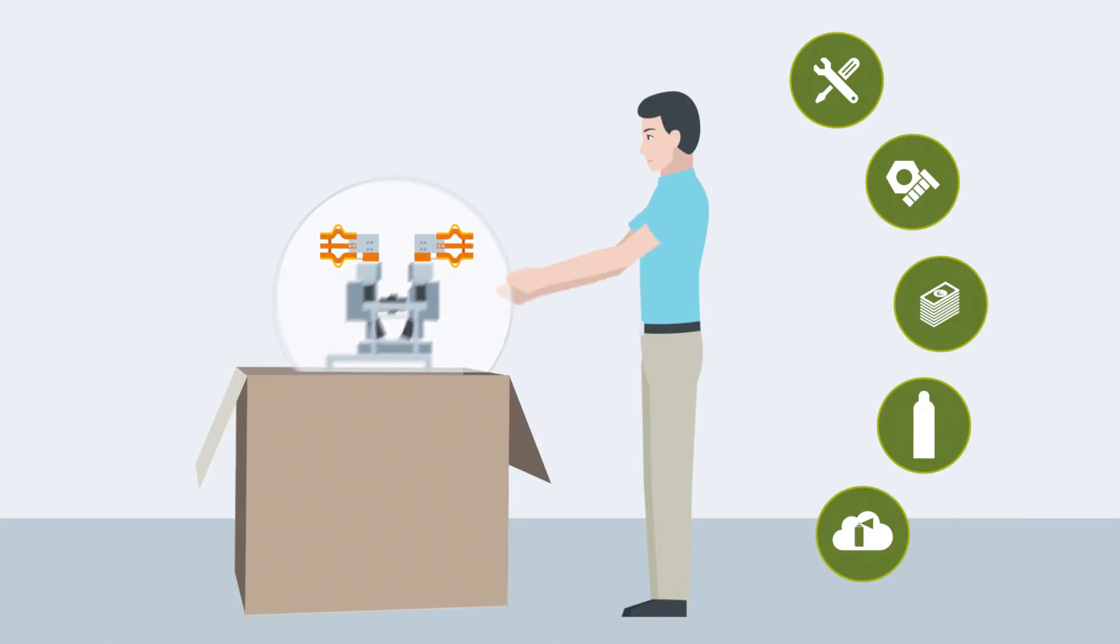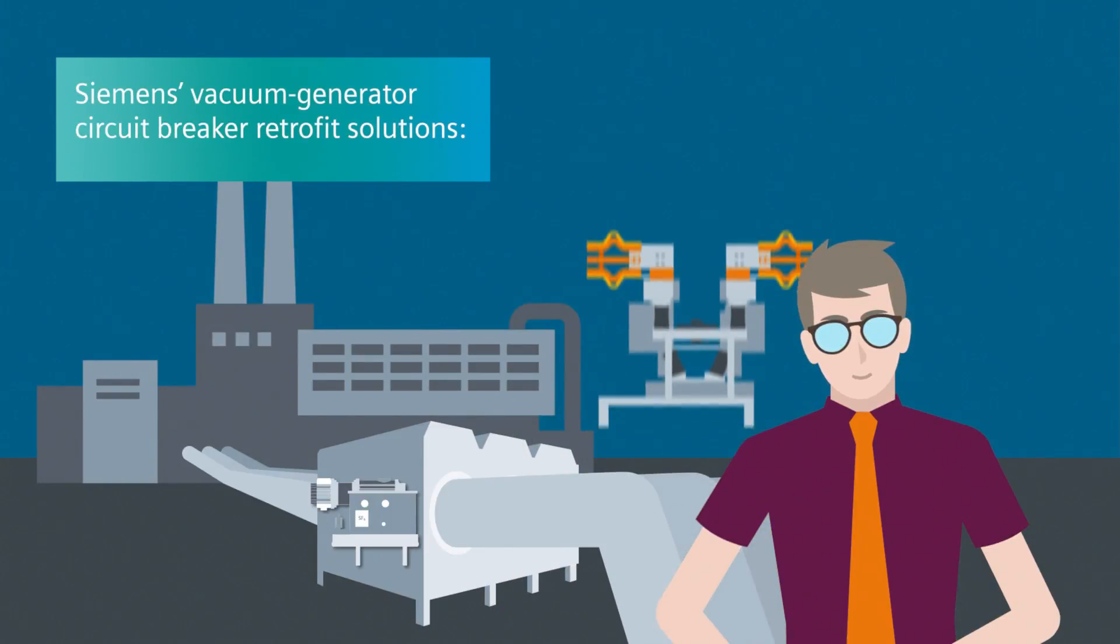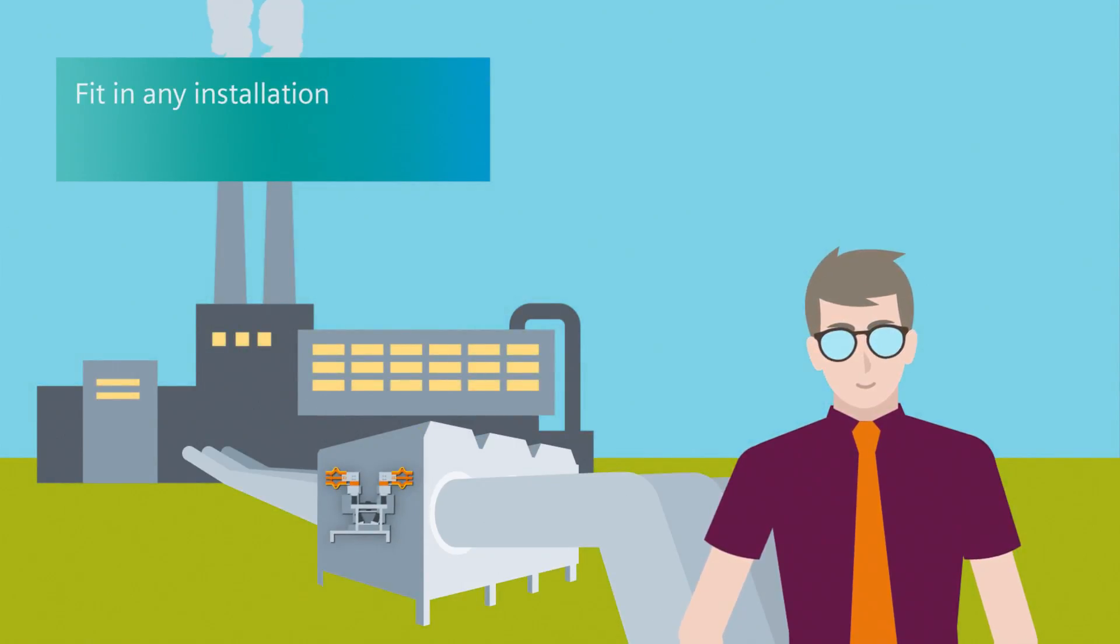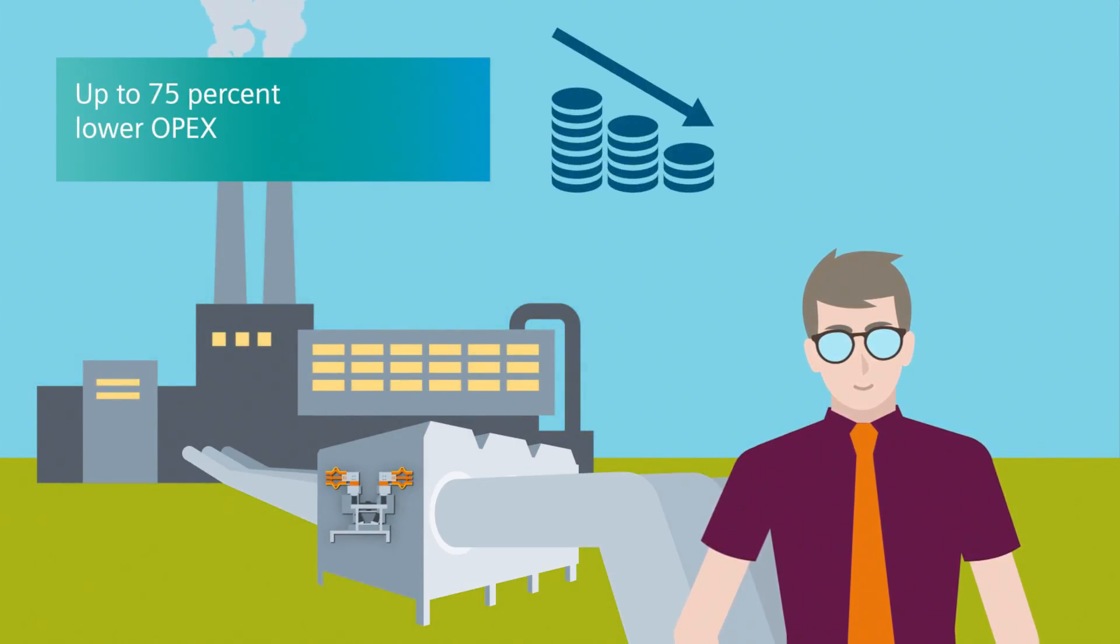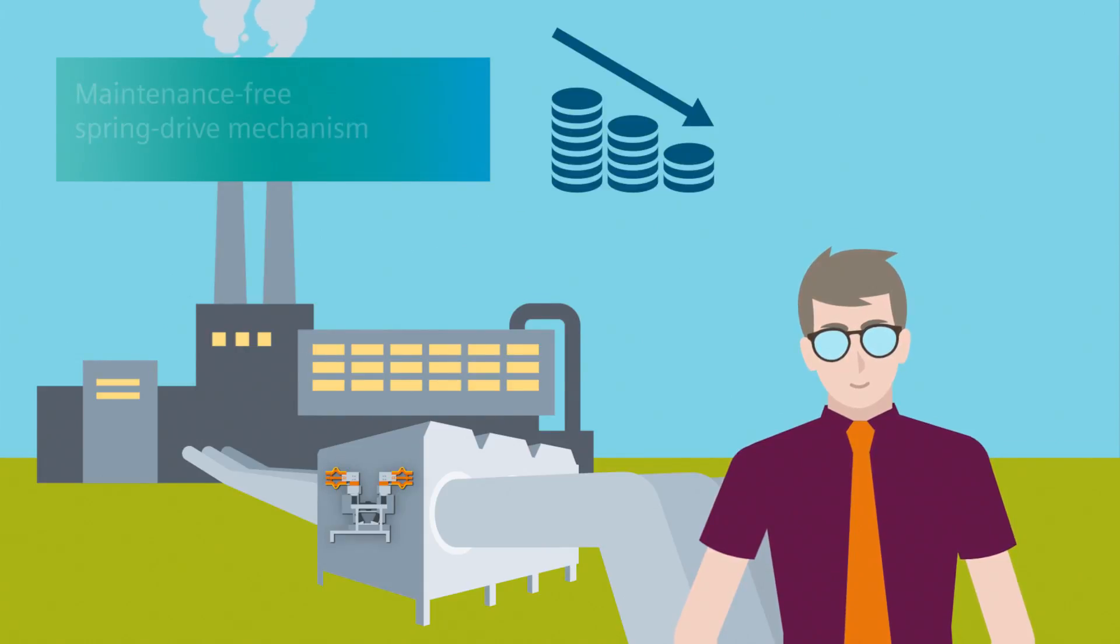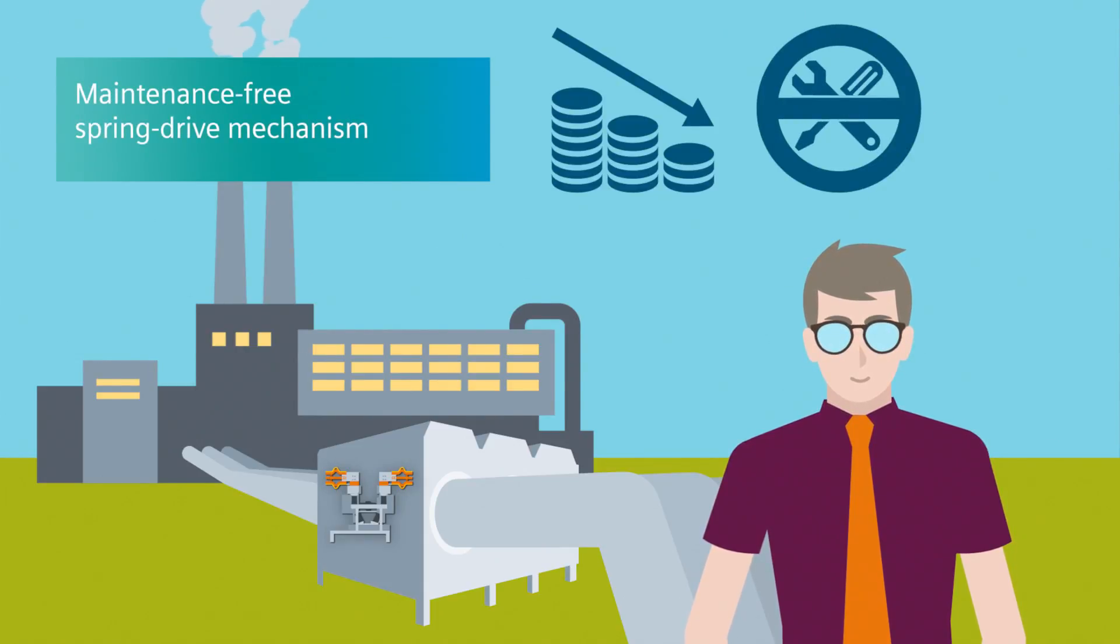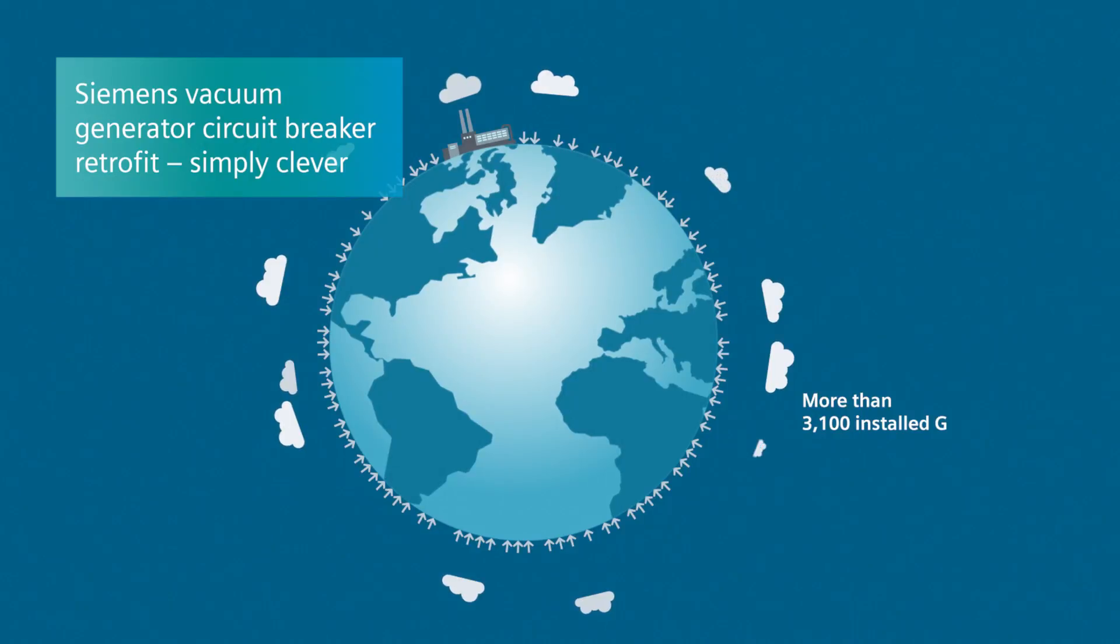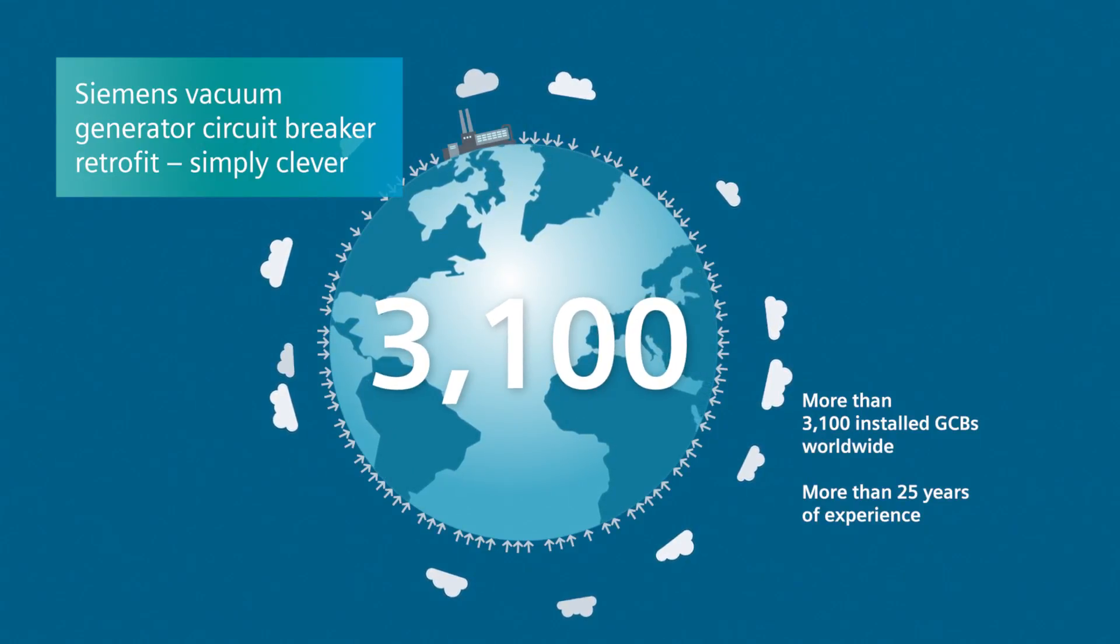Vacuum generator circuit breaker retrofit solutions from Siemens fit every installation, offer up to 75% lower op-ex, use maintenance-free vacuum switching technology with state-of-the-art reliable spring drive mechanism, and have proven their reliability in more than 3,100 installations worldwide.